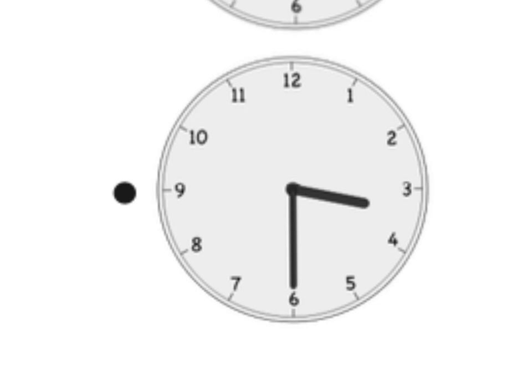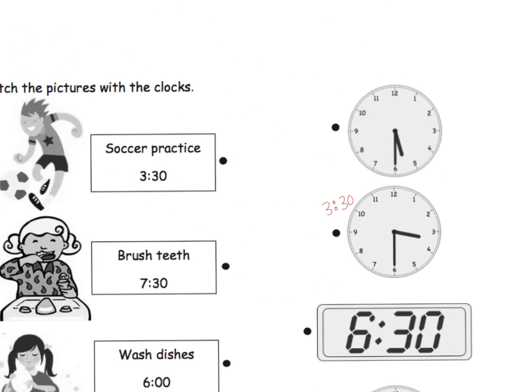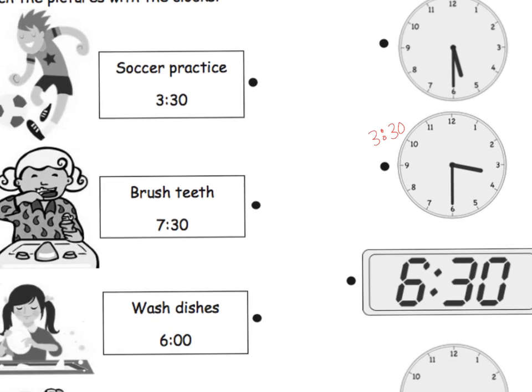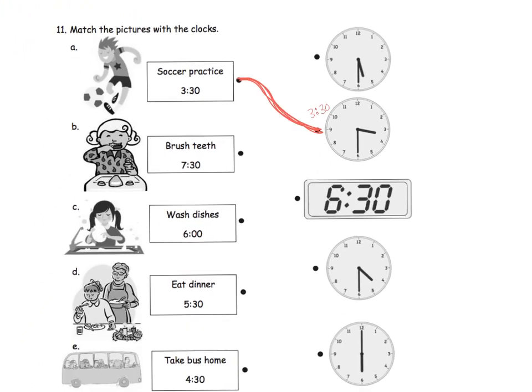So that one, and I'll write it down so we don't forget. This is 3:30. So we want to connect soccer practice, which is at 3:30, to this analog clock because this clock says 3:30. And that's the idea for this slide.